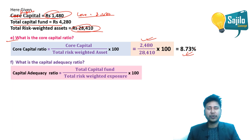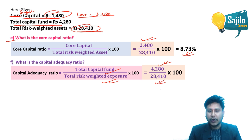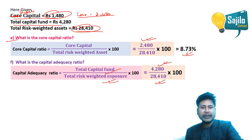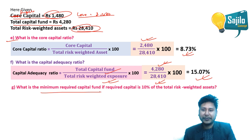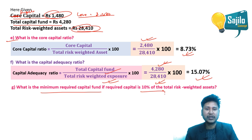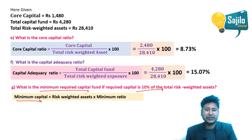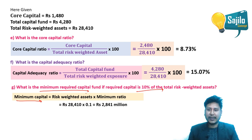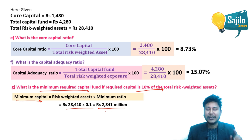For the capital adequacy ratio: total capital adequacy ratio equals total capital fund divided by total risk-weighted exposure. Total capital fund (Tier 1 plus Tier 2) equals 4,280; total risk-weighted exposure equals 28,410. This gives a capital adequacy ratio of approximately 15.07%. Finally, minimum required capital equals risk-weighted assets multiplied by the minimum required ratio of 10%.